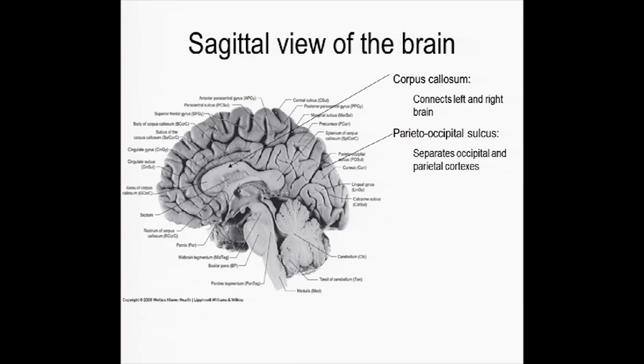One of the things when you're trying to find out what parts of the brain to remove, one of the first things you try to figure out is what side of the brain does a person use for generating speech. Because if the seizures are originating on the other side, then you can remove it without as much worry that the person is going to develop an aphasia or loss of ability to speak or understand speech.